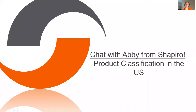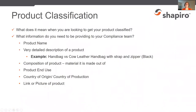Let's talk about product classification in the US. When we say 'get your product classified,' it's one of the first things we recommend when you come to Shapiro. We ask: have you had your product classified? What we mean is: do you have the harmonized tariff number or product classification for what you're going to be bringing in?